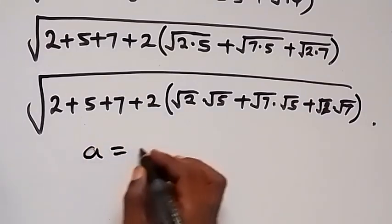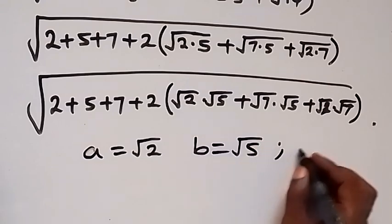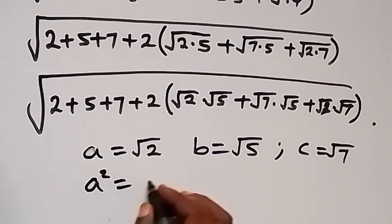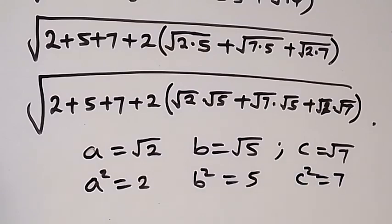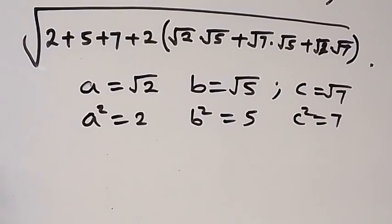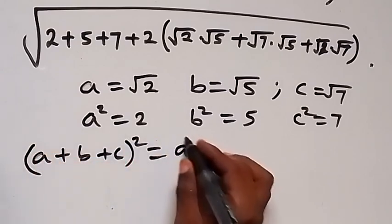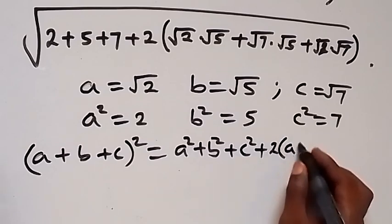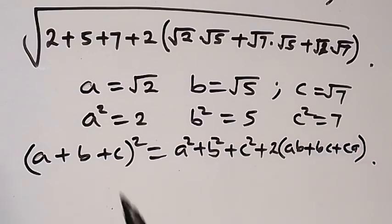From here we can represent a as root 2, b as root 5, and c as root 7. So a squared equals 2, b squared equals 5, and c squared equals 7. We should note this identity: when we have a plus b plus c all squared, this equals a squared plus b squared plus c squared, plus 2 times bracket ab plus bc plus ca.